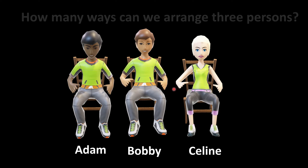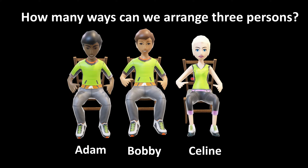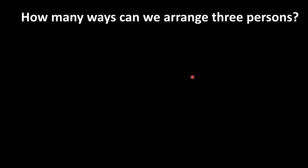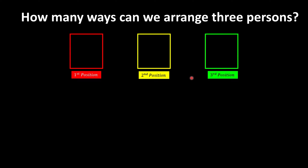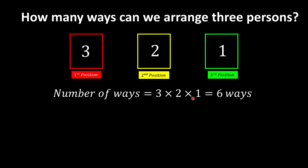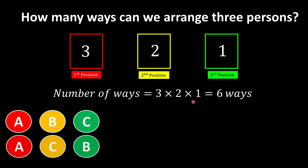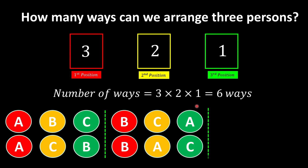We have three people arranged in a row and want to find how many ways we can rearrange them. Using permutations, we represent the positions with three boxes. In the first position, we can choose any of the three people. After placing the first, two remain for the second position and one for the third. So the total number of ways using the multiplication rule is 3 × 2 × 1, or three factorial — six ways altogether.